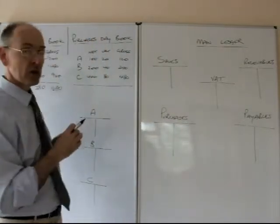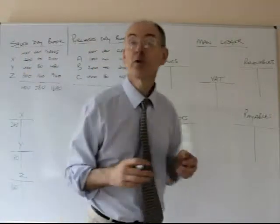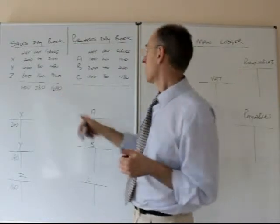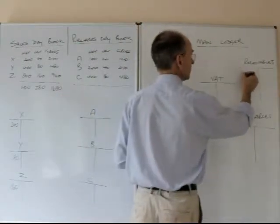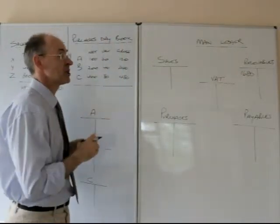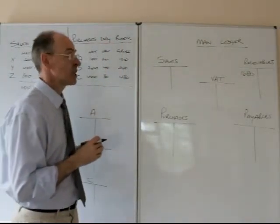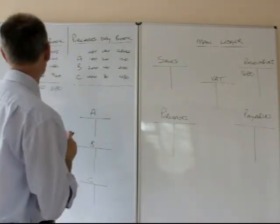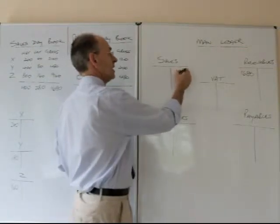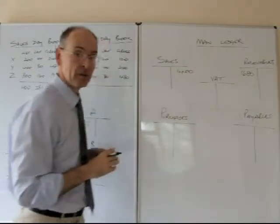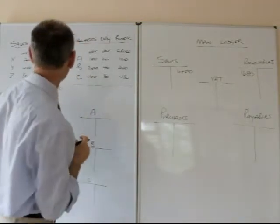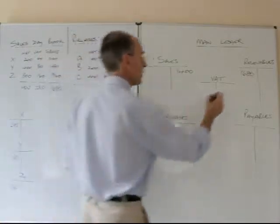From the day book, the total for receivables was £1,680. So we'll update receivables £1,680, which tells us, at the end of this day or week, whatever it is, that we are owed £1,680 from sales. The sales figure is £1,400. £1,400 records our income, £1,400 sales, and the amount that we owe for VAT from the sales day book is £280.